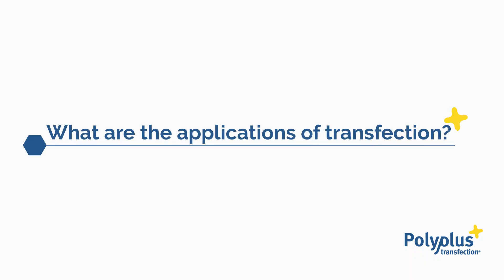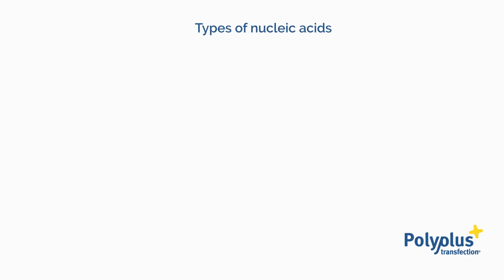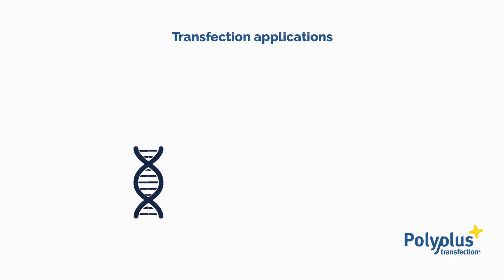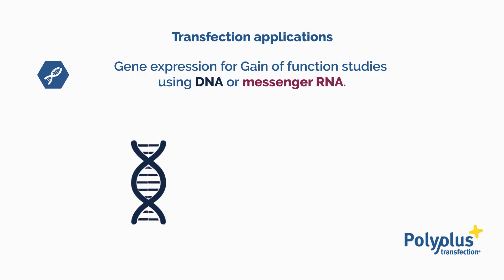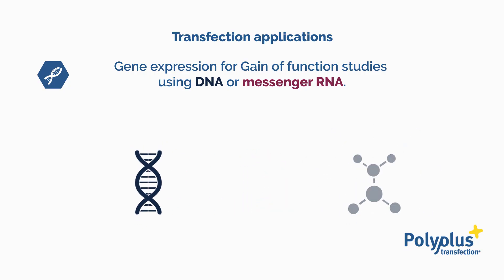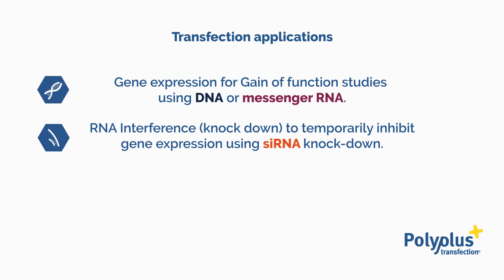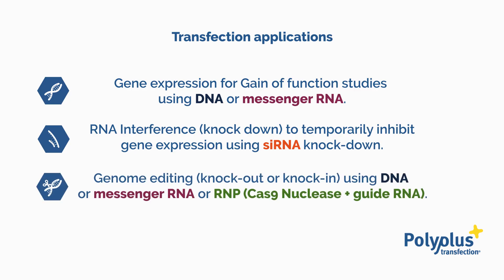Let's now take a step back to fully grasp what this technique can do. Nucleic acids do not only include DNA — it also includes RNA molecules: mRNA and other RNA-like molecules, such as siRNA and guide RNA. There are two main transfection applications. Gain-of-function studies: protein overexpression is achieved by transfecting DNA or mRNA. Loss-of-function studies: the protein is either transiently knocked down or, using a genome editing approach, irreversibly knocked out or modified.